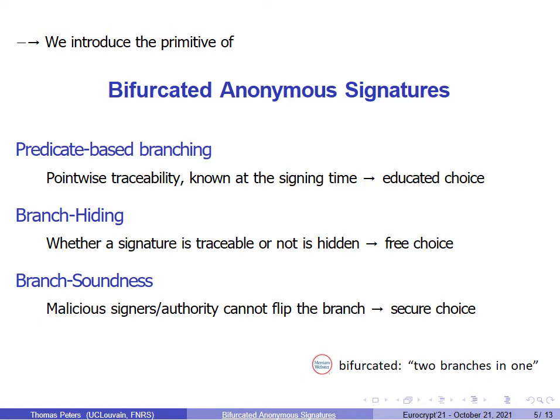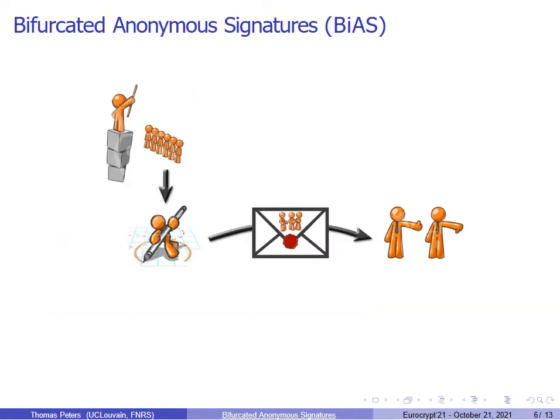As a side note on the meaning of bifurcated, the Merriam-Webster dictionary says that it is actually two branches in one. More intuitively, this is how bifurcated anonymous signatures work. We have a group manager who creates some credentials for the user who belongs to the group. Once enrolled, a user can sign any message, and before signing, he or she can evaluate the predicate to know whether the signature will be traceable or not. Once the signature is output, anyone can verify its validity, as in an ordinary signature.